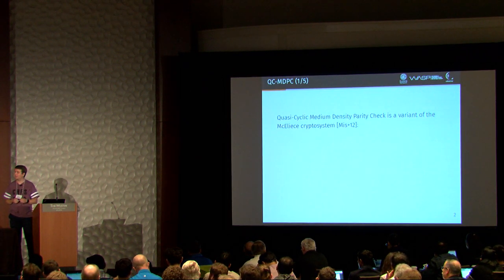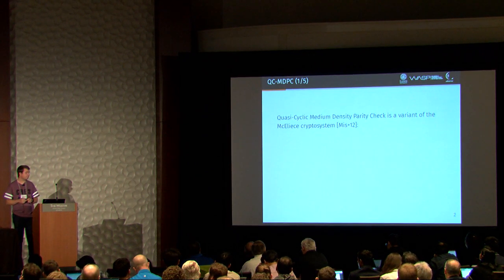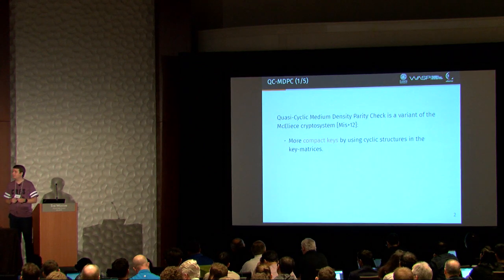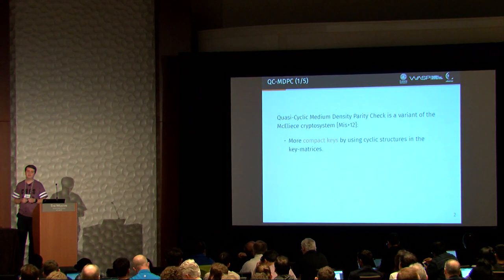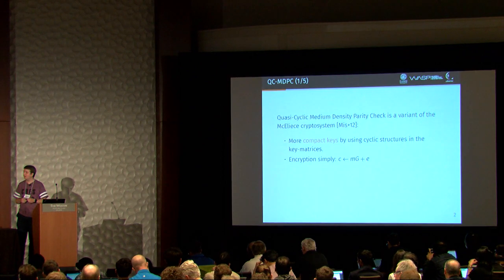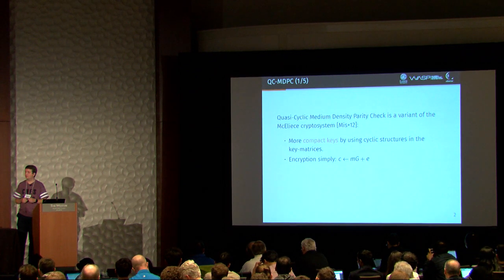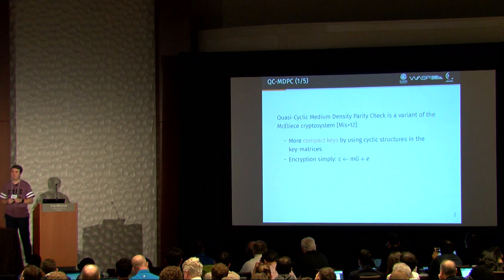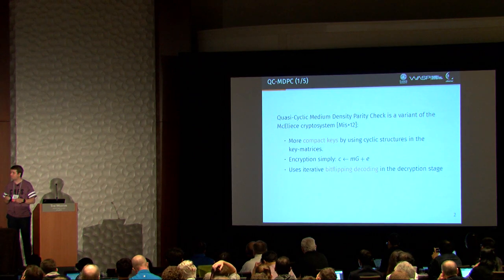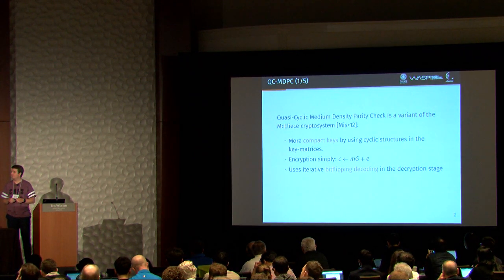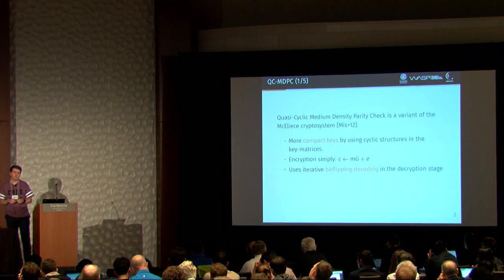One of these are the quasi-cyclic medium density parity check codes. It has smaller keys, and it attains this by using cyclic structures in the key matrices. And it's a very simple encryption where we basically take the plaintext times the generator matrix and add some noise.